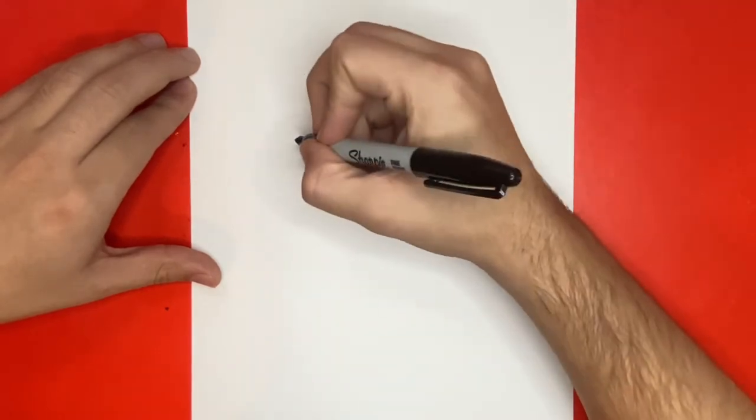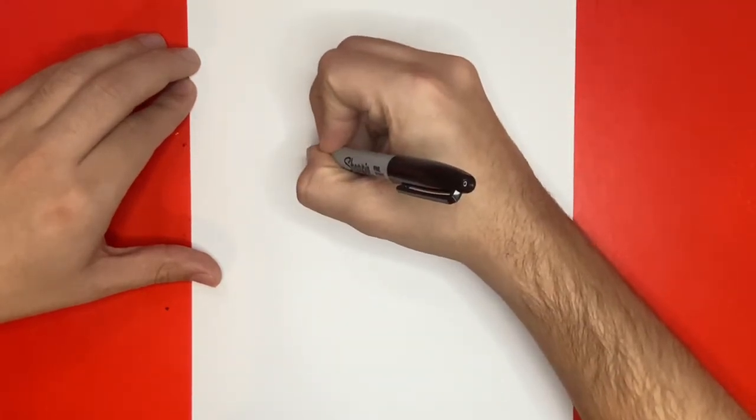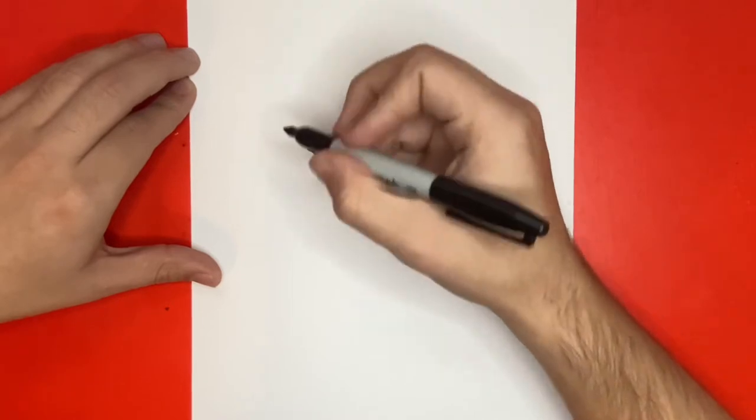So for the first step, we're going to begin by drawing the nose of our Echidna. We're going to do it right here on the left-hand side, and it's going to be on a slight slant.